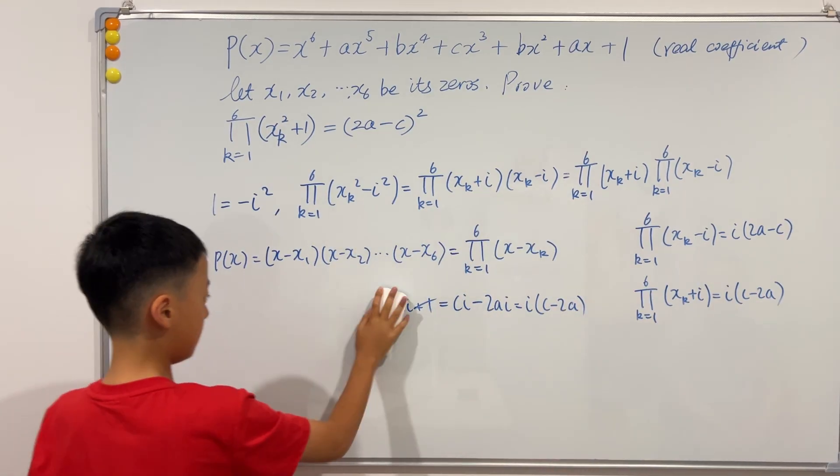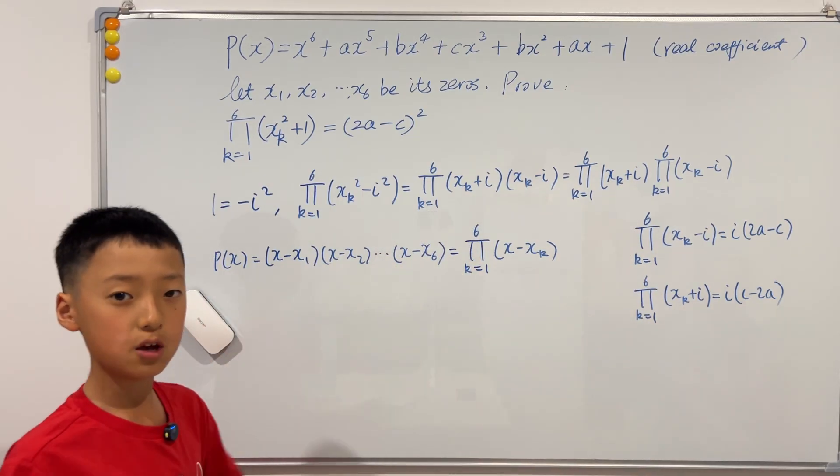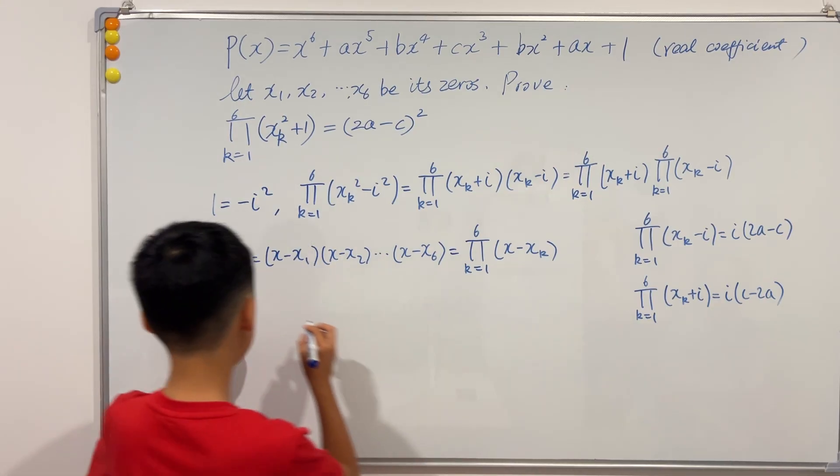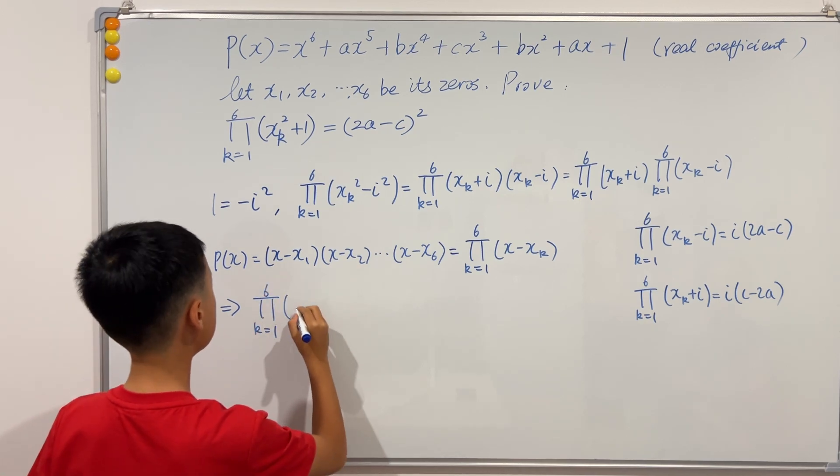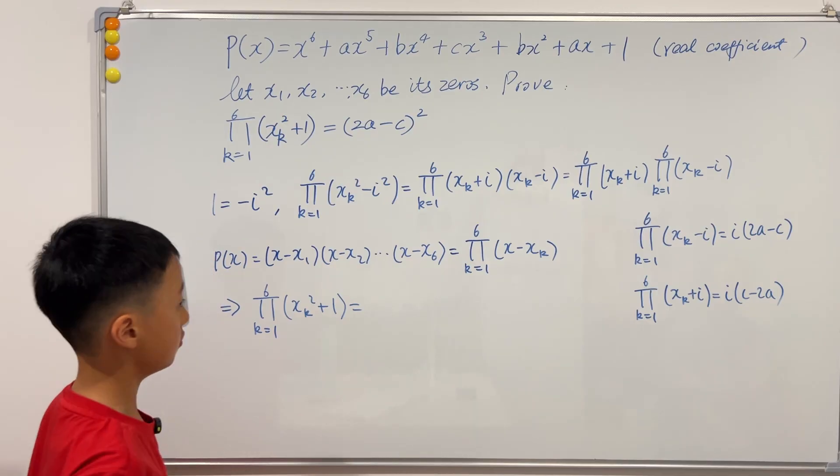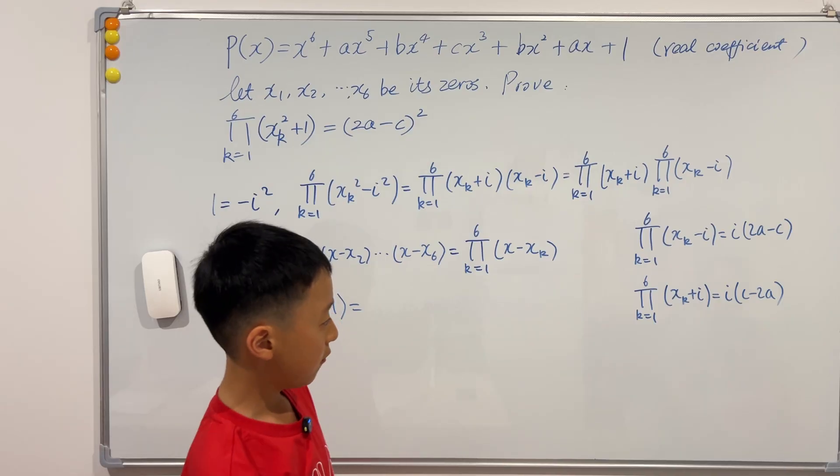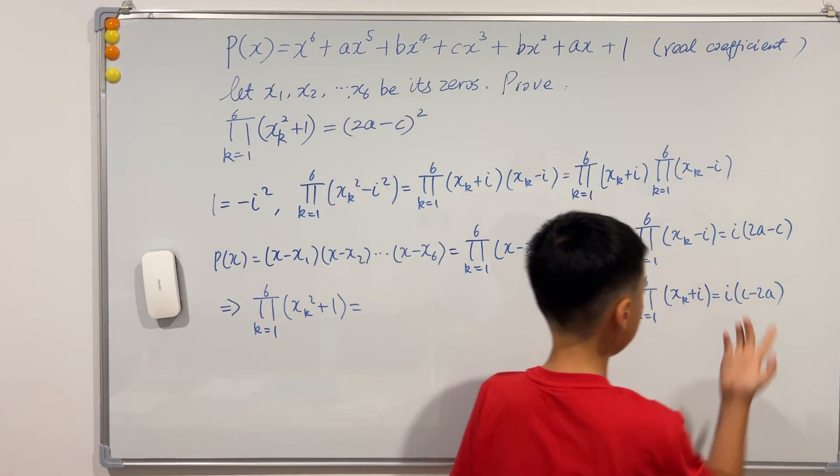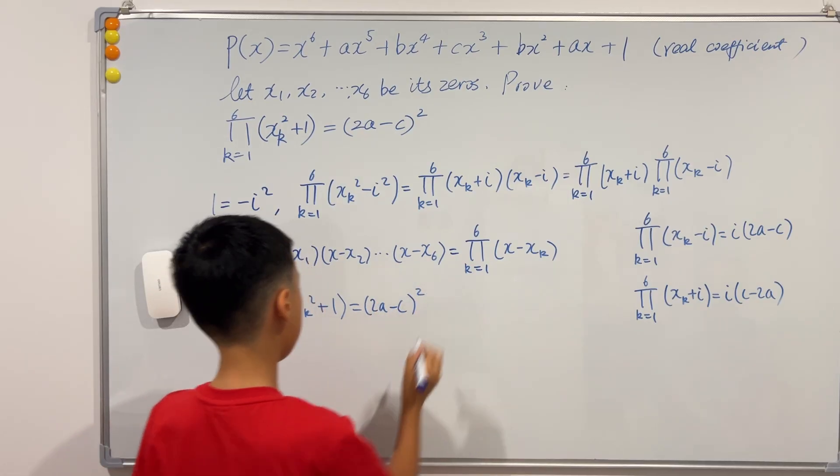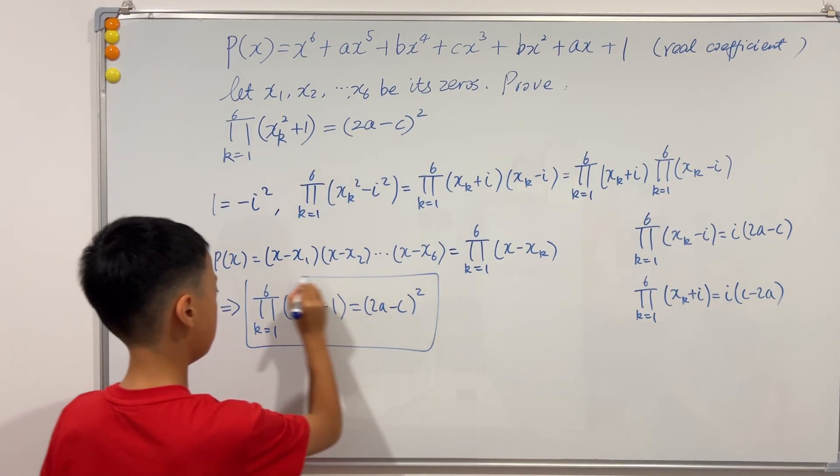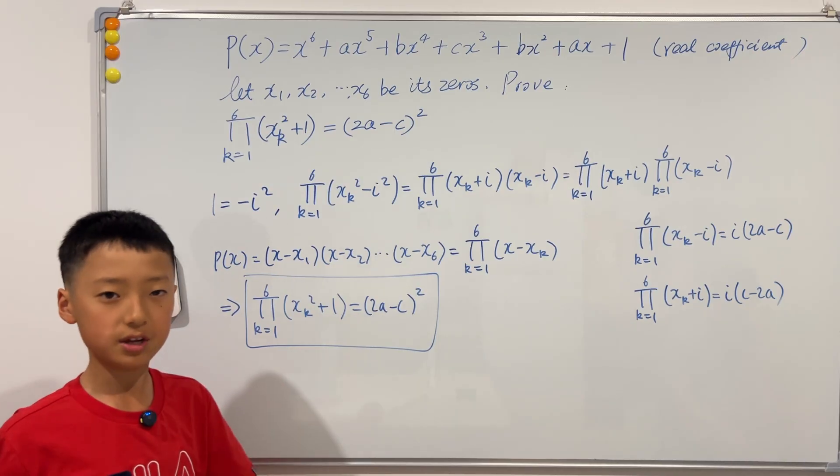Okay, so now that we have both of these capital pi's, then if we multiply them together, then it will all go back to this. So capital pi, k equals 1 to 6, of x_k squared plus 1, is equal to this times this. i squared is negative 1, and if we put the negative 1 into this, then the output will just be 2a minus c squared. And look, this is exactly what we wanted to prove.